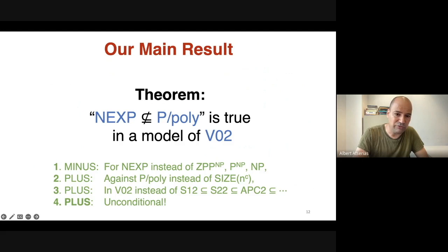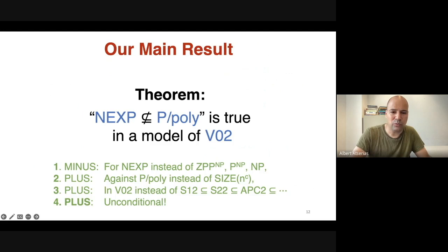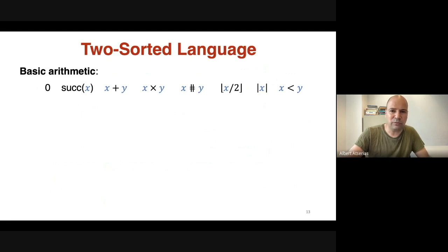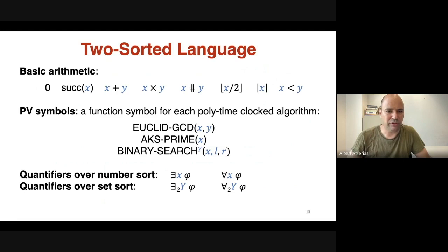Another plus is that instead of using theories within the polynomial hierarchy, we now use V⁰₂ which is well above the polynomial hierarchy. And the final plus is that the statement is unconditional. So we get the best of all worlds: lower bounds against the full P/poly, the highest possible theory within the polynomial hierarchy, and an unconditional result.